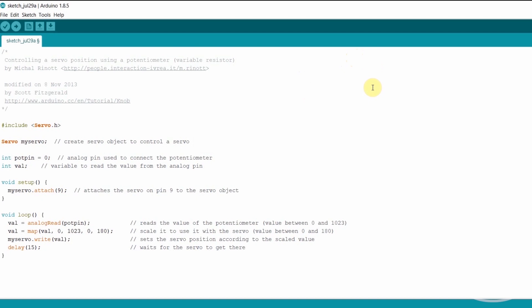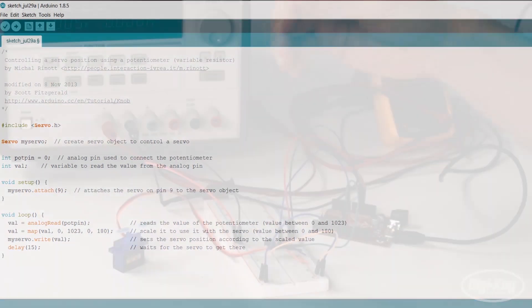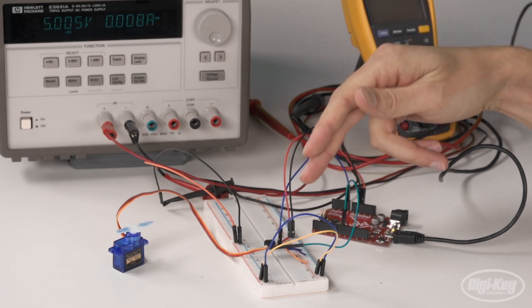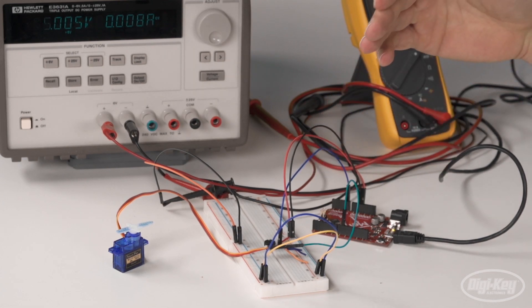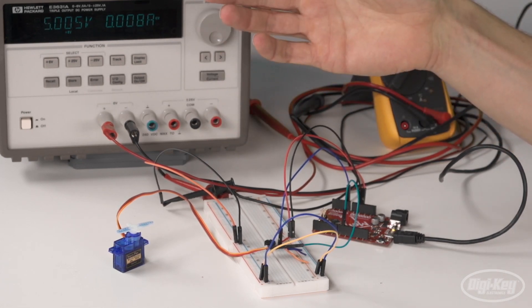Before I do the demo, I'd just like to mention that the code I'm using is the Arduino knob example for servos. It does an analog read on the potentiometer pin, which then maps it to a value between 0 and 180, before sending that value to the servo as its target speed.